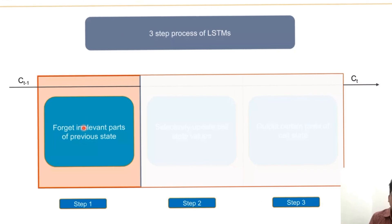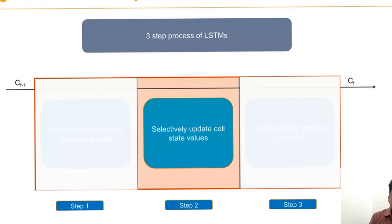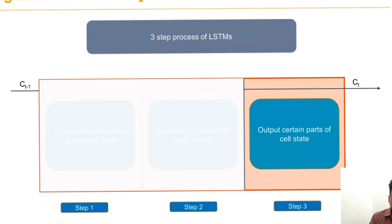Number one: forget the irrelevant information in the previous state and remember only what's important to remember. Then update the cell state values in a selective manner. Then predict certain parts of the output.